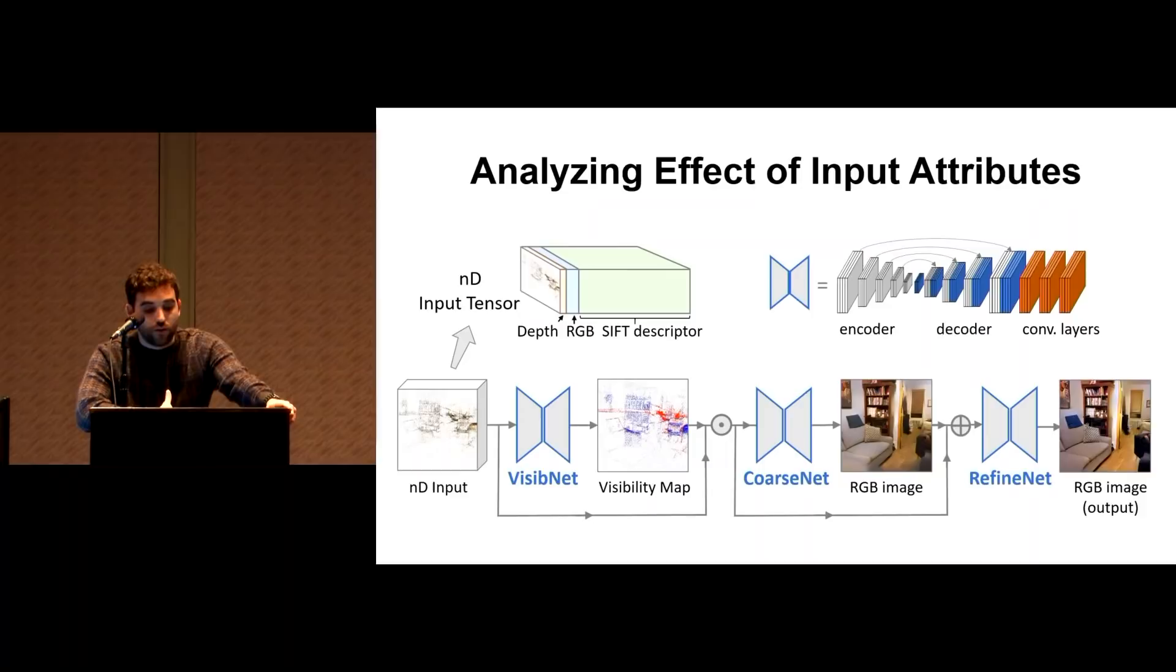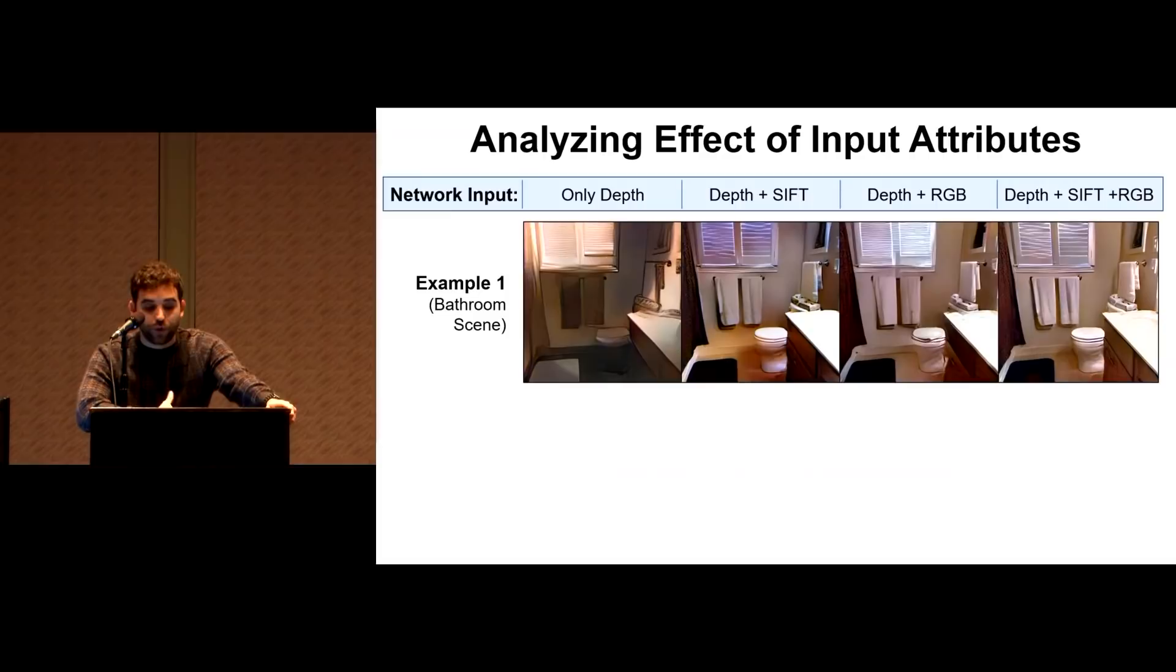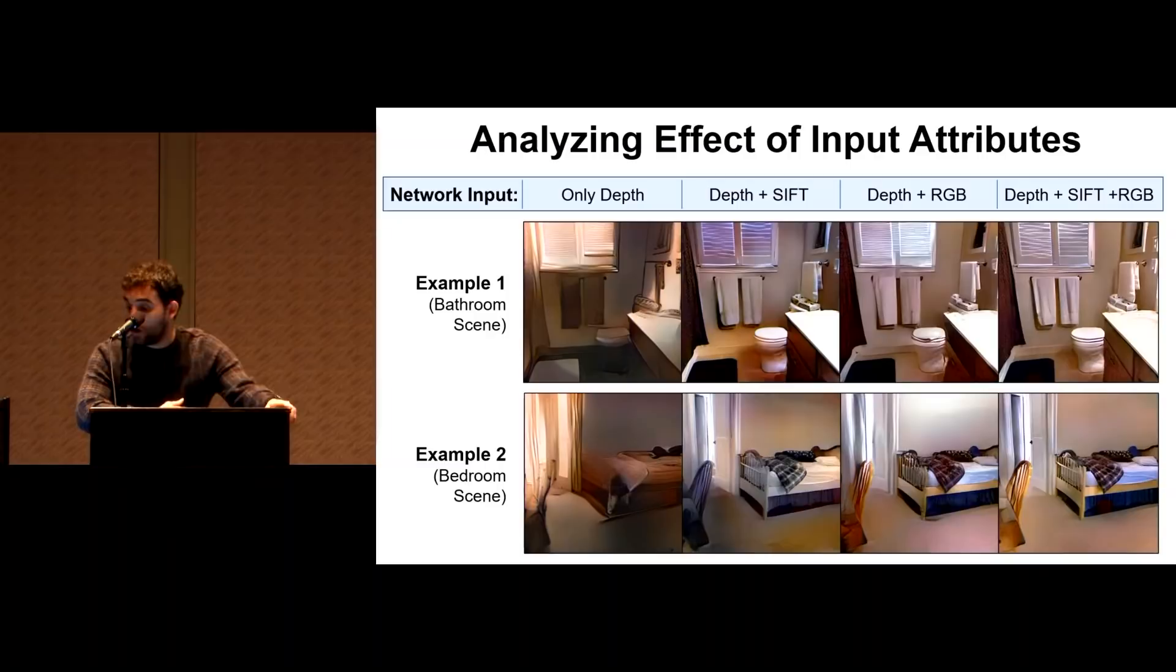So we now look at the effect of using different input attributes as the input. So to do this, we trained four models with different input attributes. One with only depth, one with depth and SIFT, one with depth plus RGB, and a fourth with depth, SIFT, and RGB. And as you can see, all the models perform quite well, surprisingly, even when only depth is included. So of course, it's helpful to have more information, but they still perform well.